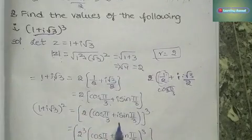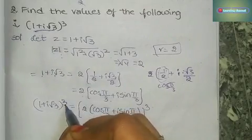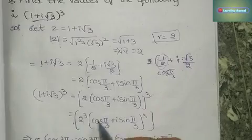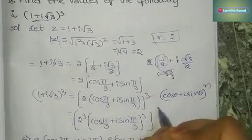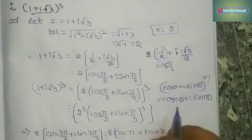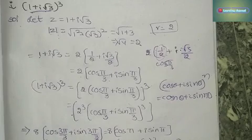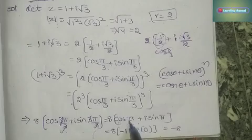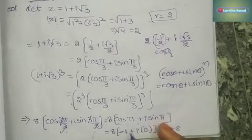Now apply the cube. From De Moivre's Theorem: (cos θ + i sin θ)^n = cos nθ + i sin nθ. So (1+i√3)³ = 2³(cos(3π/3) + i sin(3π/3)) = 8(cos π + i sin π). Since cos π = −1 and sin π = 0, the answer is 8 × (−1) = −8.